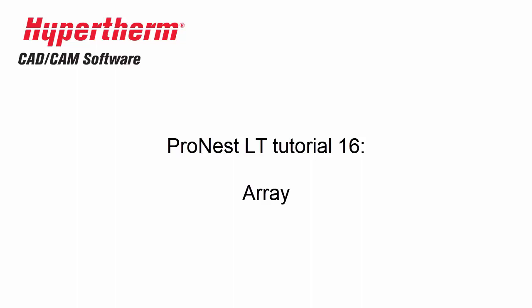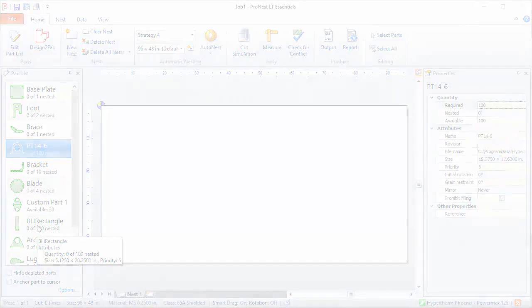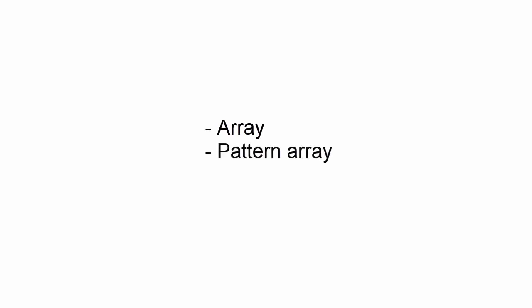In this video, we'll discuss arraying parts, which is a very effective way of nesting multiple copies of a single part. There are several different methods of arraying parts. Three standard features in Pronest LT are Basic Array, Pattern Array, and Drag Array. First, let's talk about Basic Array.